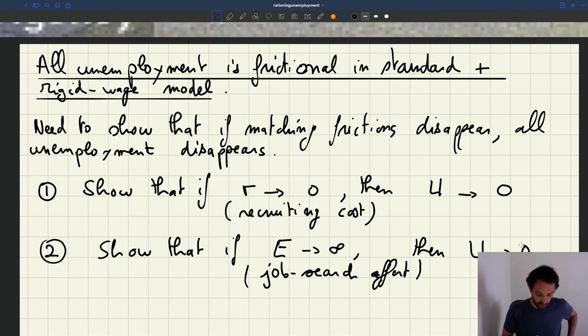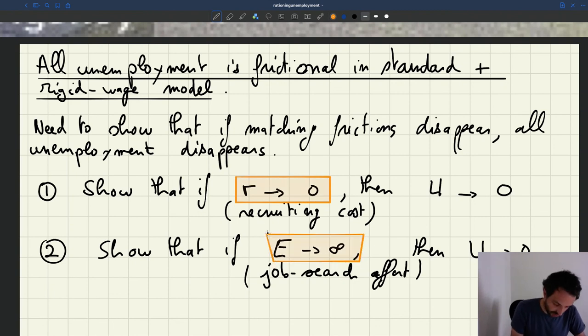Okay, and so we're going to show, we're going to look at what happens when R goes to zero and when effort goes to infinity. We're going to look at that both in the matching model, in the standard matching model and in the rigid wage matching model. But it turns out that the analysis would be exactly the same in both models. So let's start by looking at what happens when R goes to zero because it's easier. We don't need to modify the model in any way. We don't need to introduce new parameters.